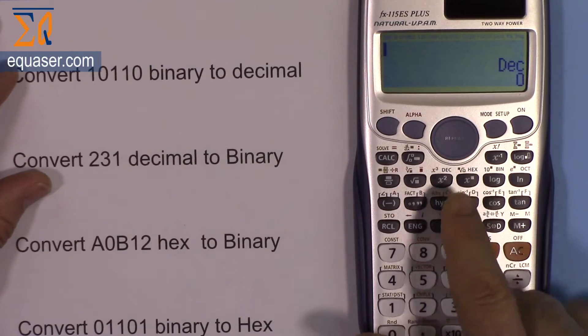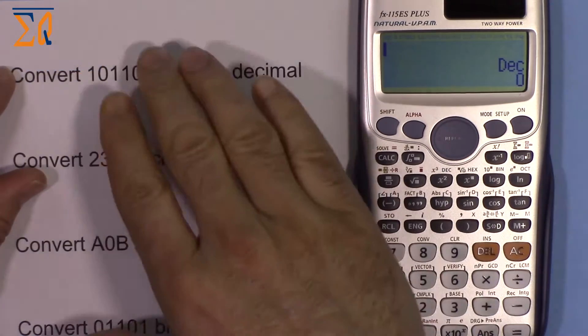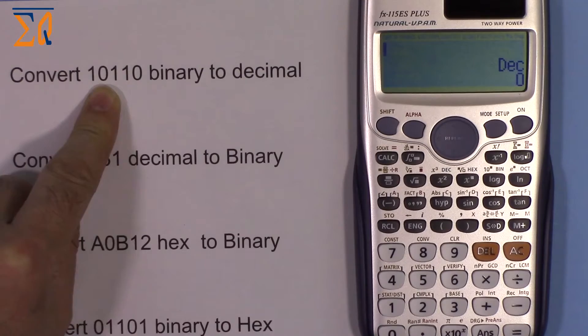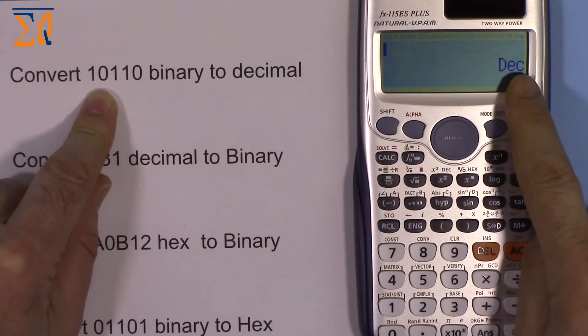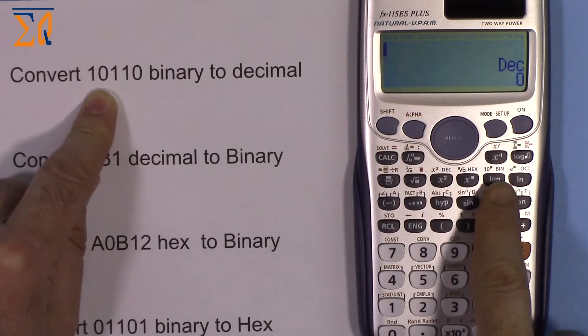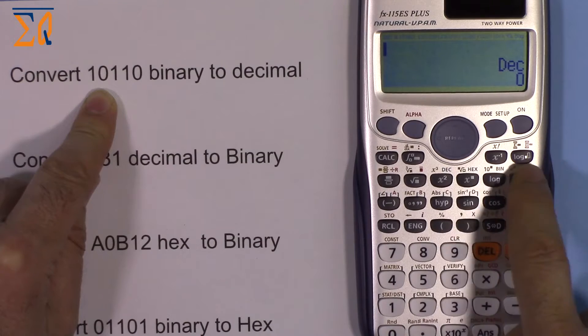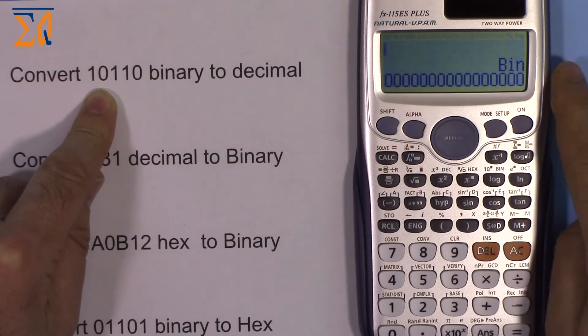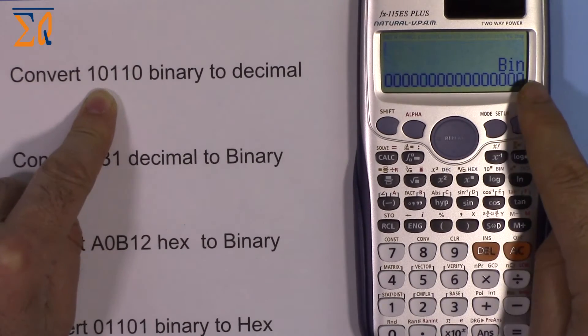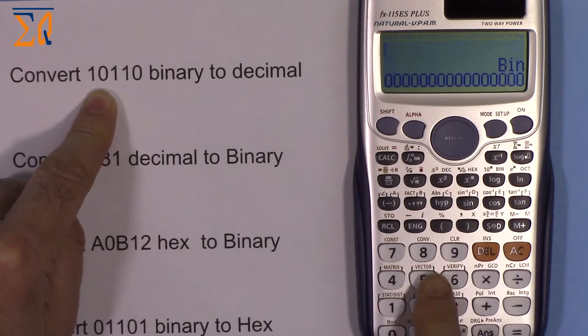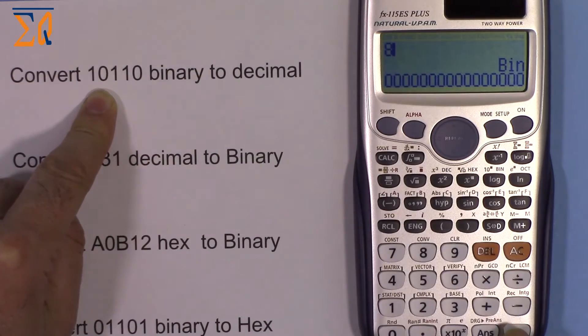To convert from binary, we need to be in binary mode. This shows decimal, BIN is binary. I'm pressing the lock button. Now we're in binary mode. When you're in binary mode you can only press 0 and 1.